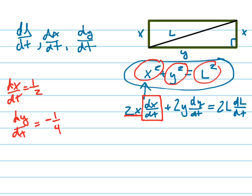How fast is the diagonal changing? DL/DT equals what when x equals 3 and y equals 4? All I'm doing is taking this equation and plugging in all the values.